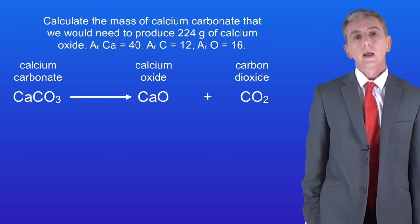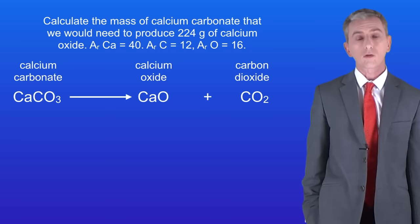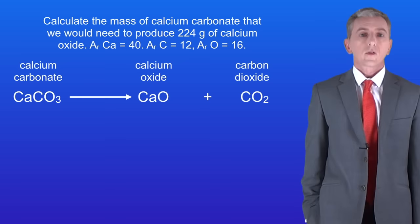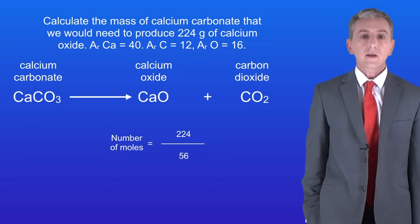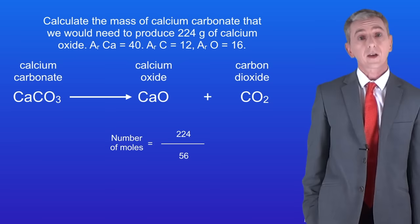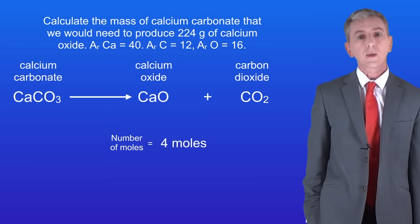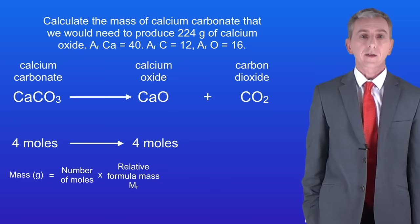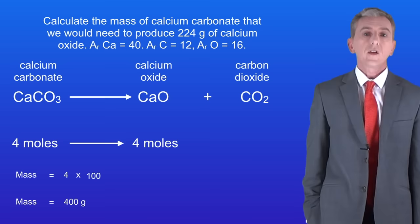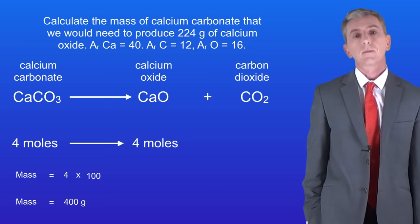Here's another one for you. Calculate the mass of calcium carbonate that we would need to produce 224 grams of calcium oxide. Pause the video and try this yourself. We need to make 224 grams of calcium oxide. We find the number of moles by dividing the mass by the relative formula mass. The relative formula mass of calcium oxide is 56, so 224 divided by 56 means that we need 4 moles of calcium oxide. There are no big numbers in the equation, so 1 mole of calcium carbonate could produce 1 mole of calcium oxide — meaning we need 4 moles of calcium carbonate. To calculate the mass we multiply the number of moles by the relative formula mass of calcium carbonate, which is 100. This means that we need 400 grams of calcium carbonate — and that's our final answer.